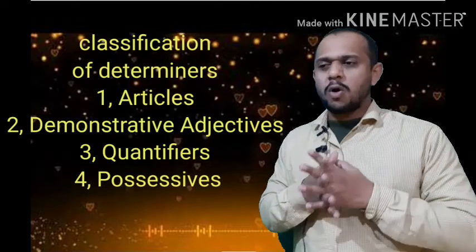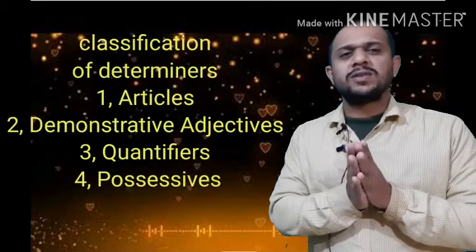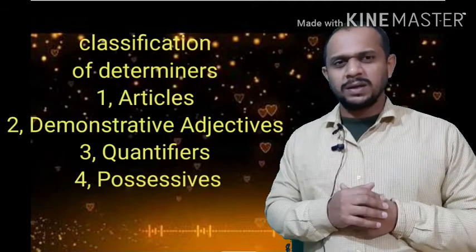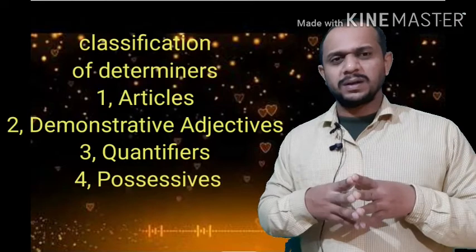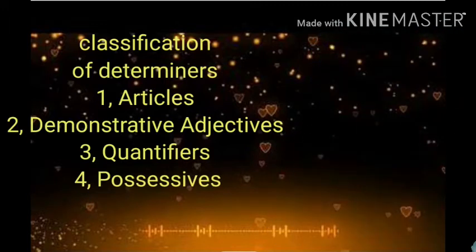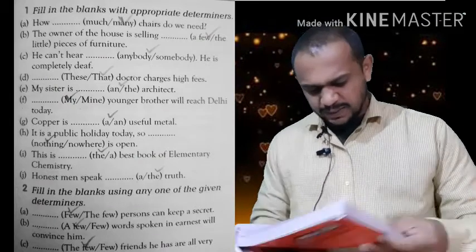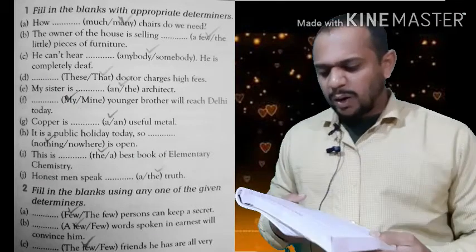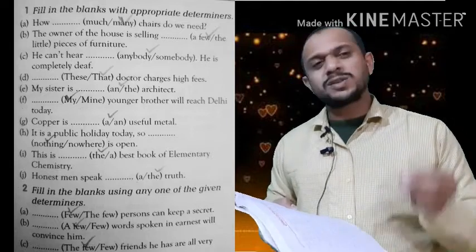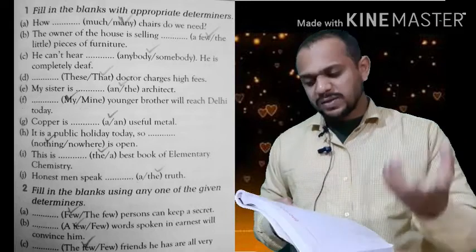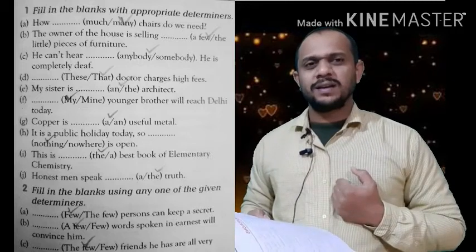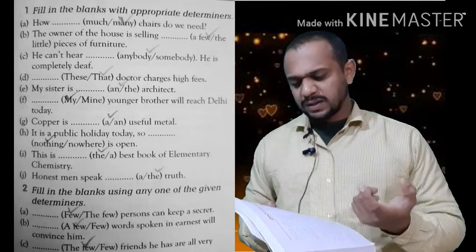Now we are dealing with exercises. So it was all about determiners. Now in the next portion we'll see exercises on determiners. Exercise one: 'How dash chairs do we need?' — much or many? We will use 'many.' How many chairs? Because 'much' is used for fluids or liquids, and chairs are countable, so we use 'many.'